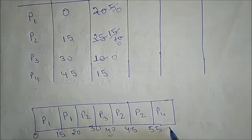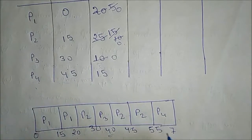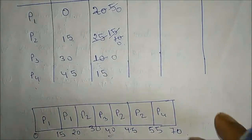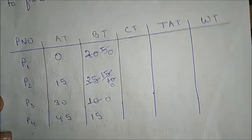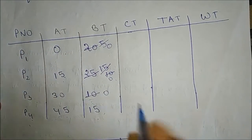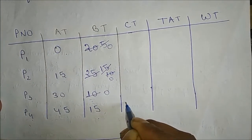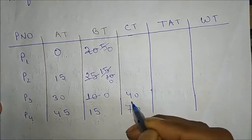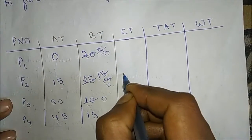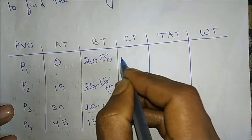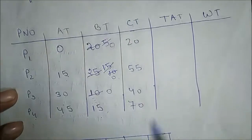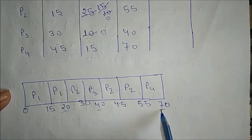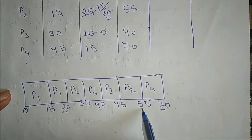Now only P4 remains, and it runs for its remaining 15 units from 55 to 70. So the completion times are: P1 = 20, P2 = 55, P3 = 40, P4 = 70.